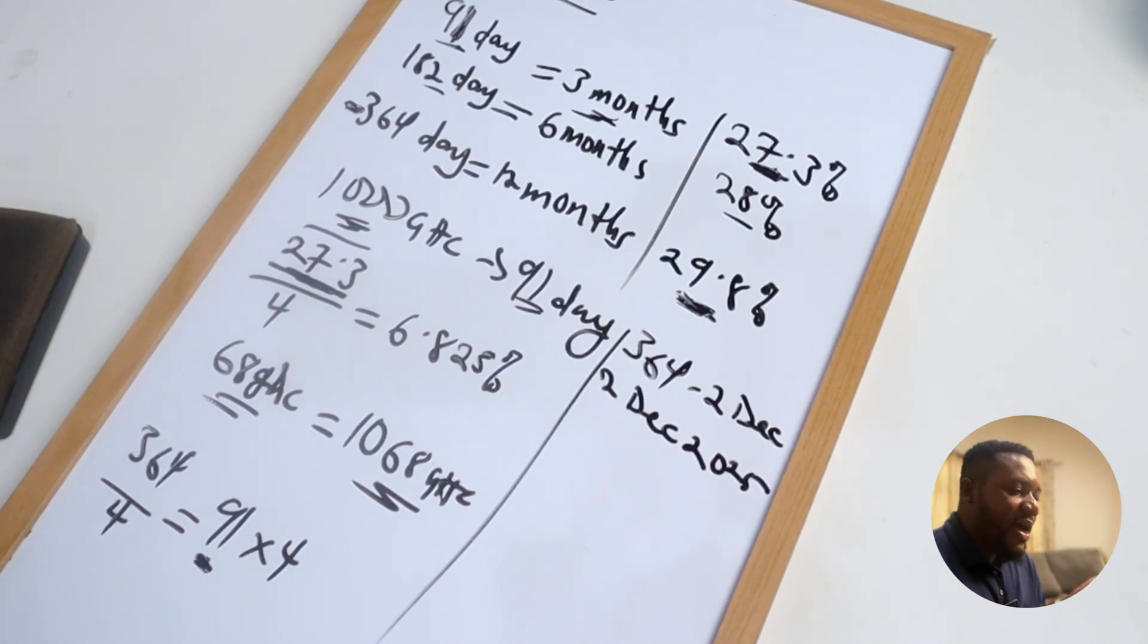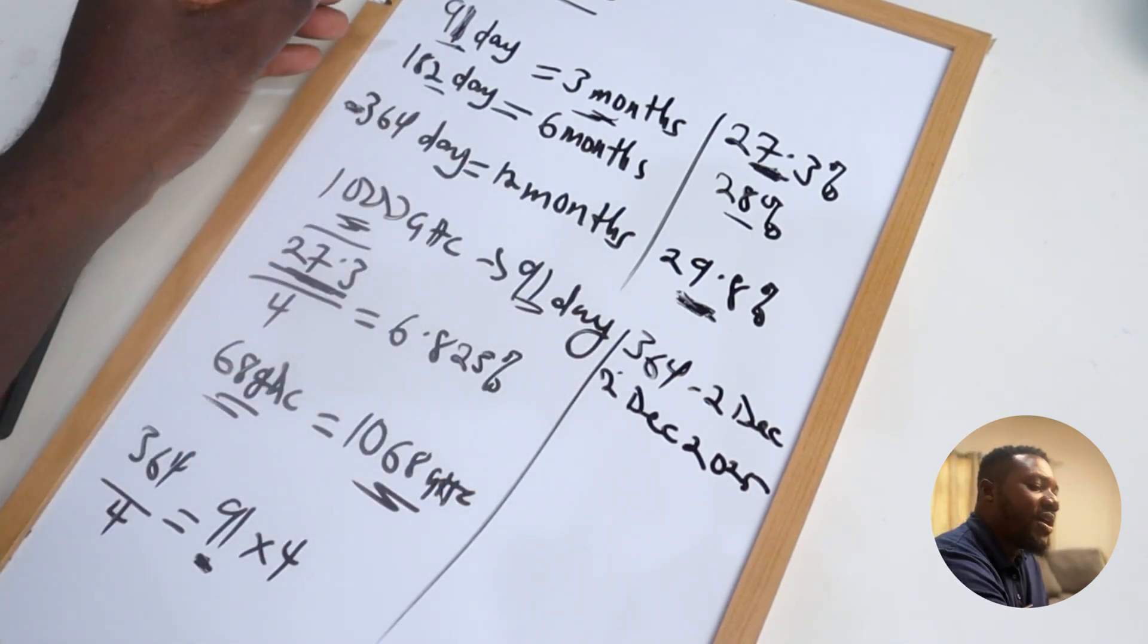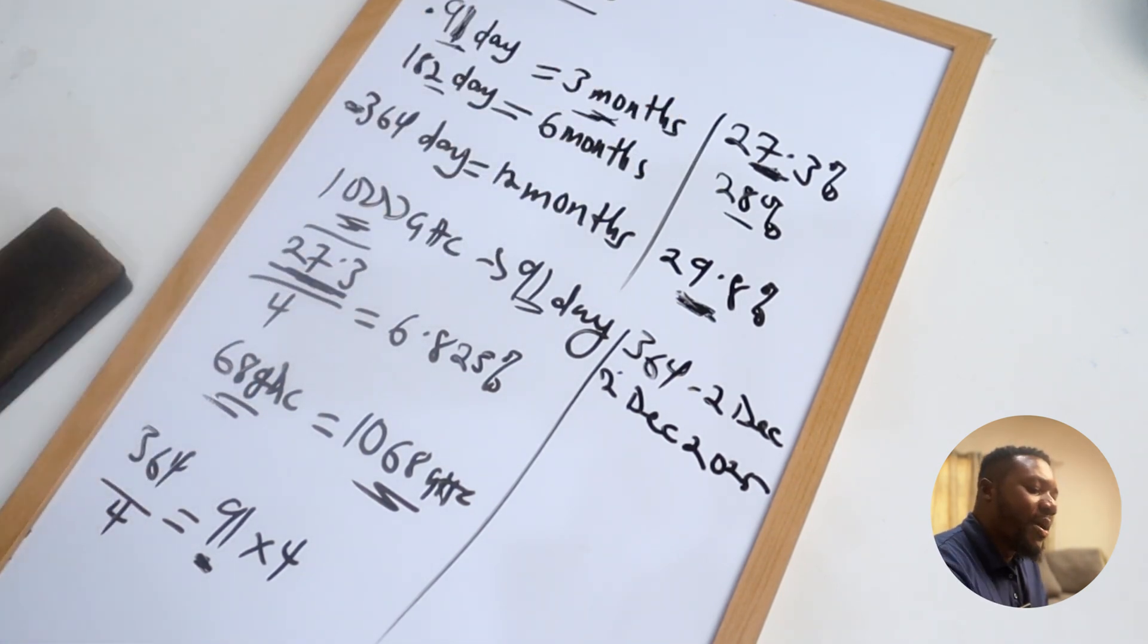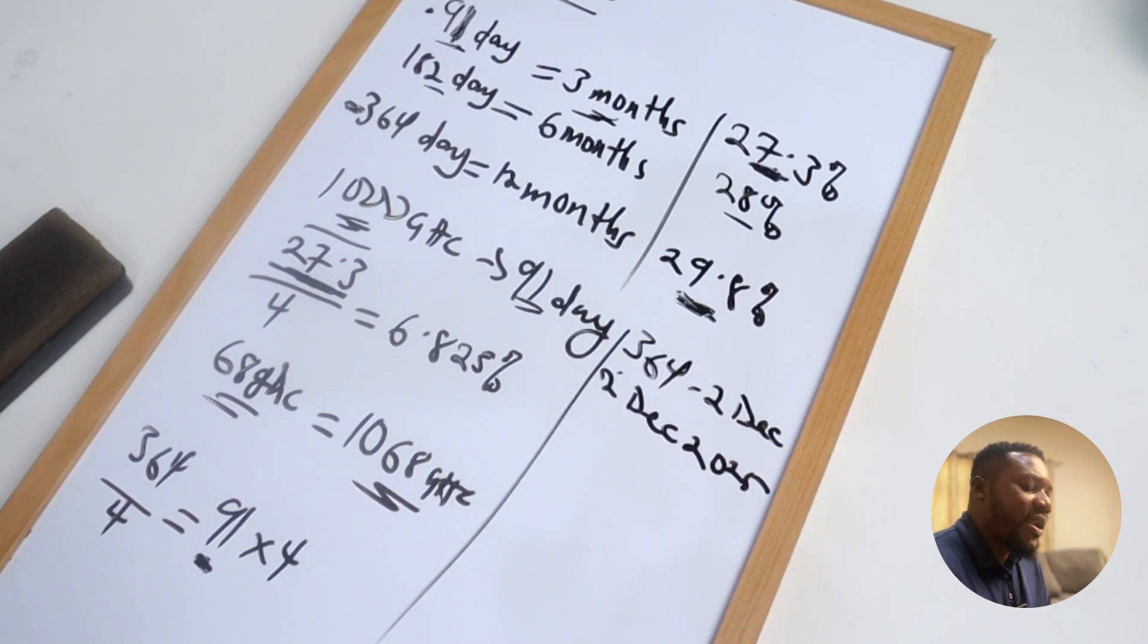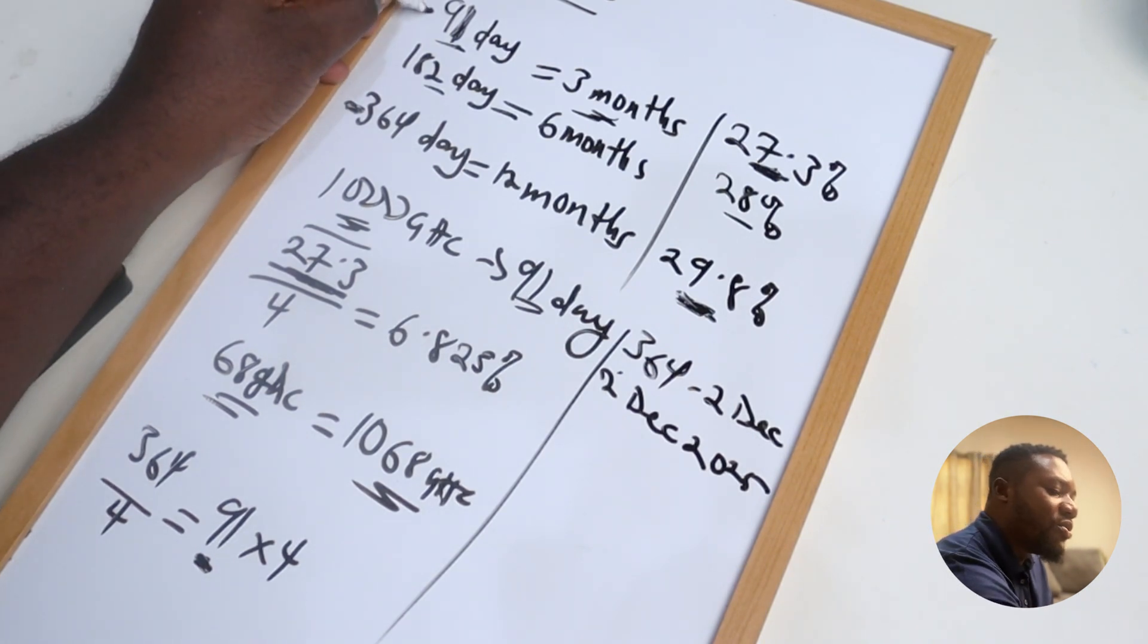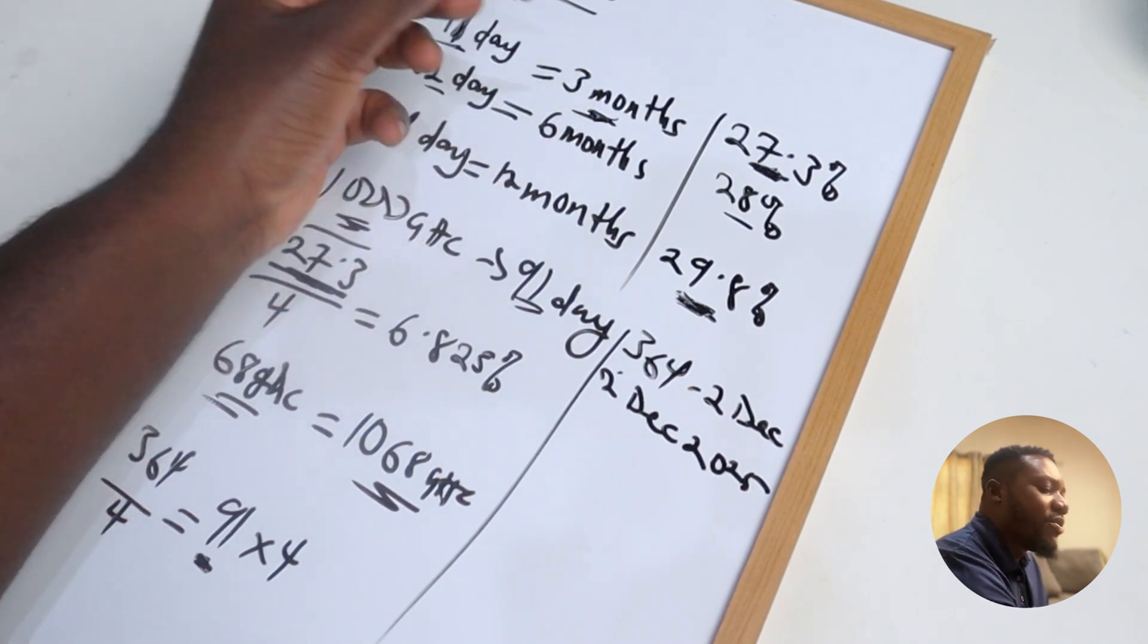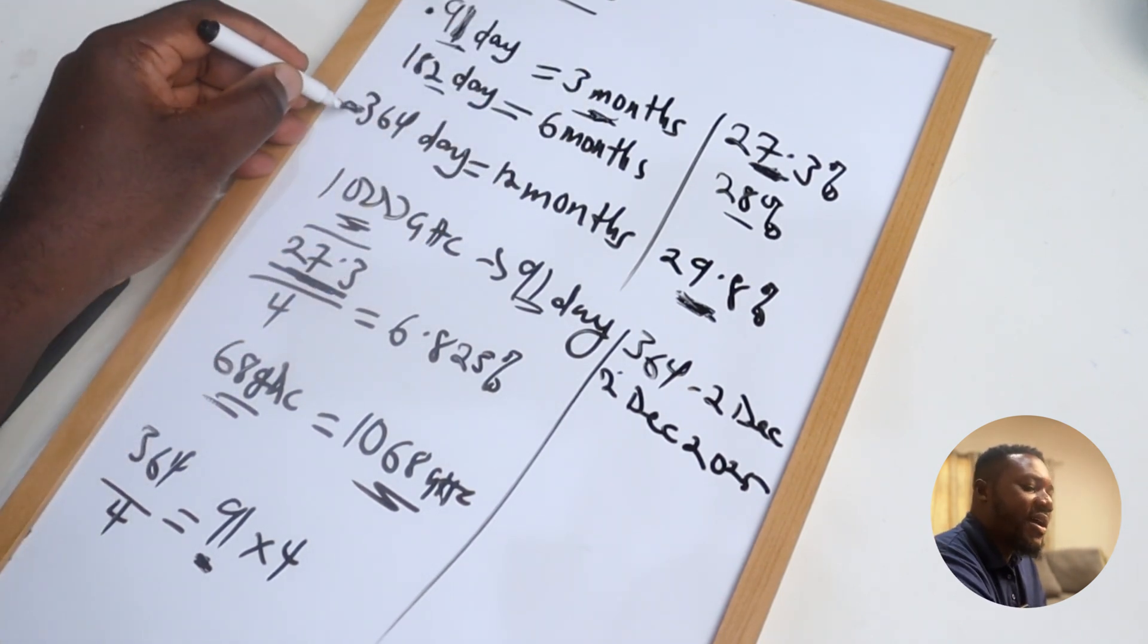However, if I decide to do the 91 day bill today, in three months I'm going to get my money and my profit back into my account. And then if I want to continue, I would then reinvest that money again for another three months, for another three months, until I get entire 364 days.